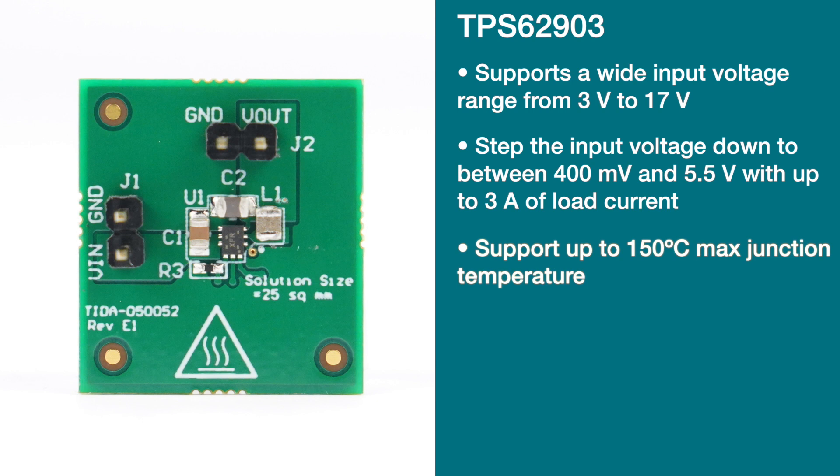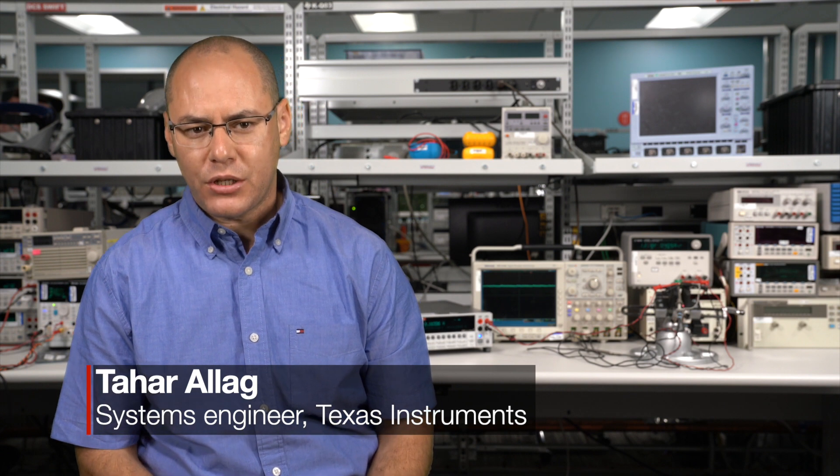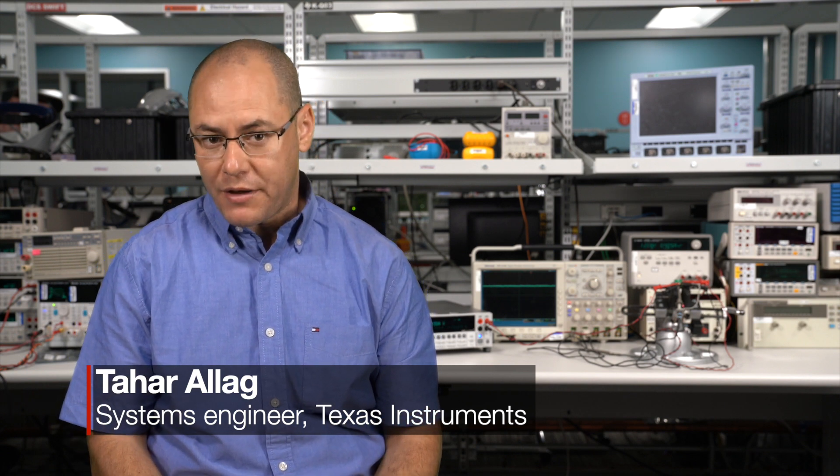It can also support up to 150°C maximum junction temperature. First, I'd like to highlight the efficiency of this device at both heavy and light load conditions. At heavy load, the improved RDS on of the FET reduces the conduction losses of the device. At light load, the device benefits from its low quiescent current of 4 microamps.